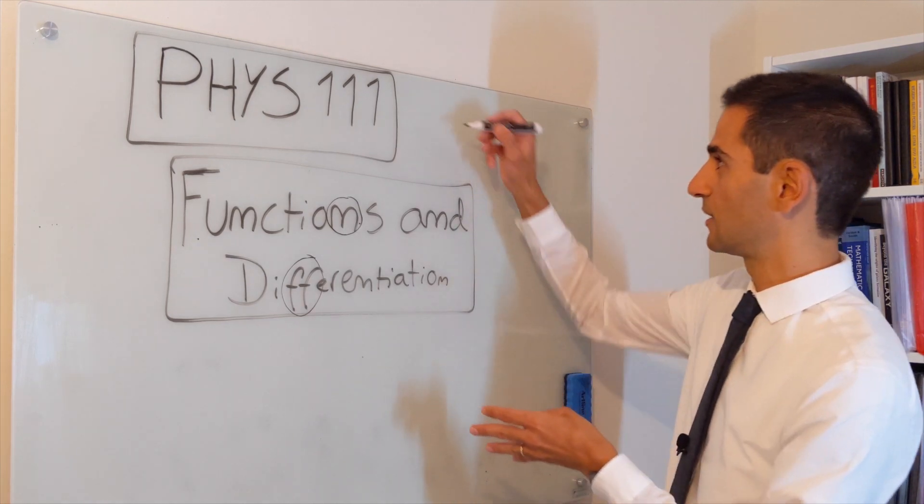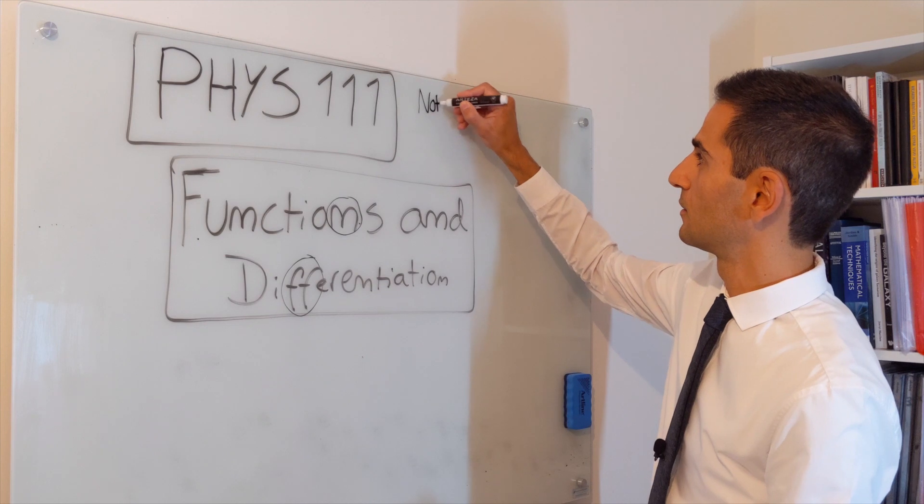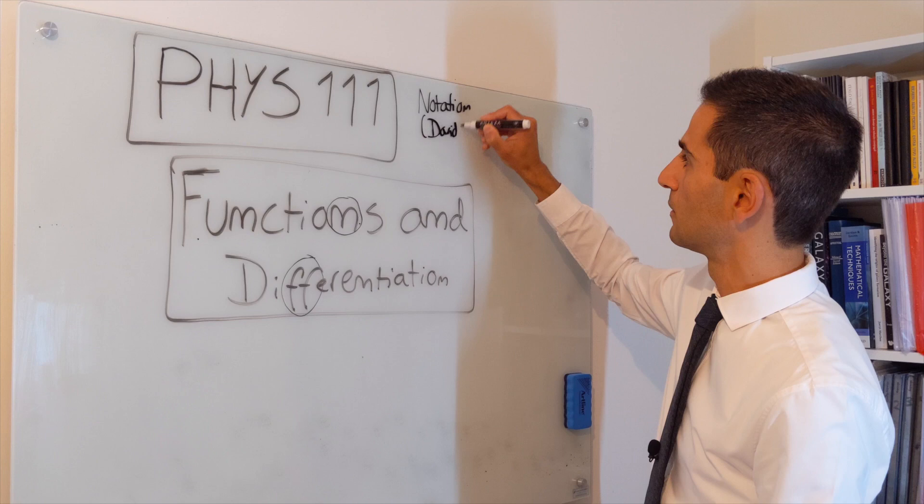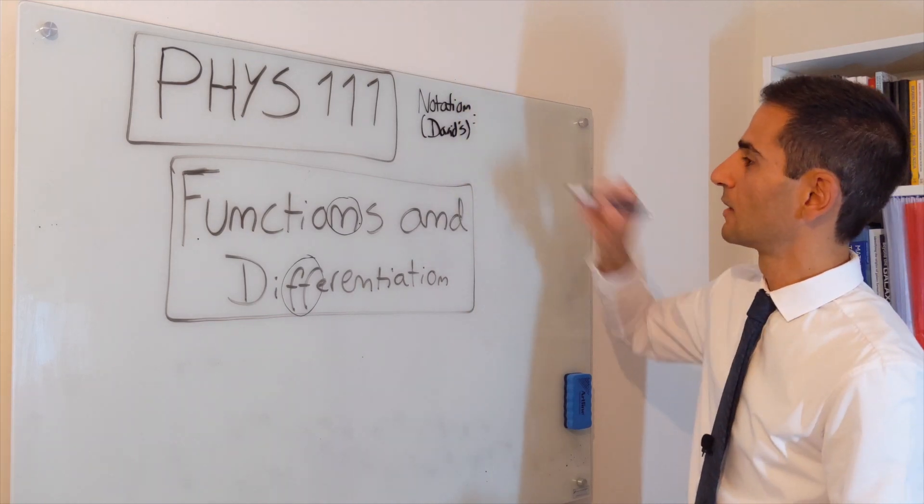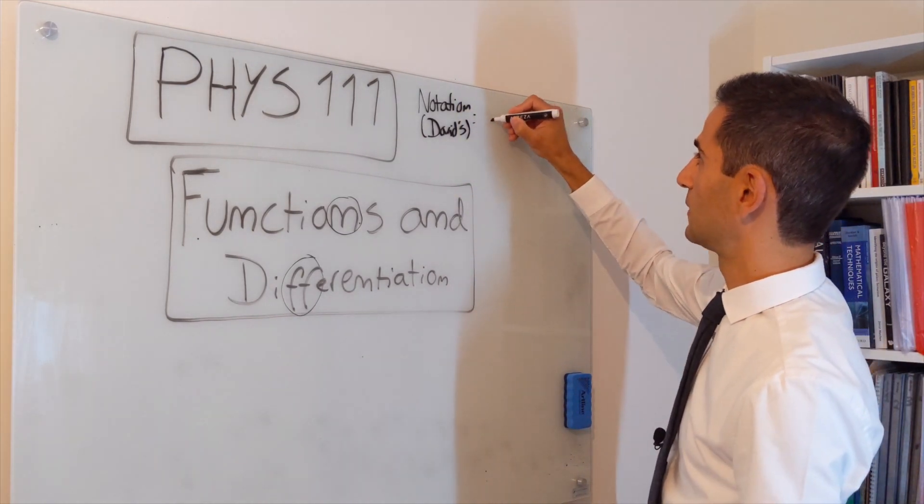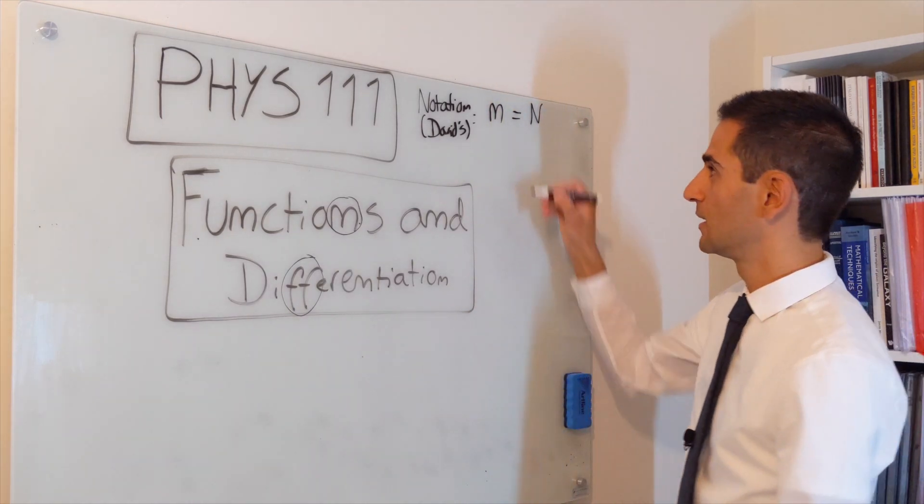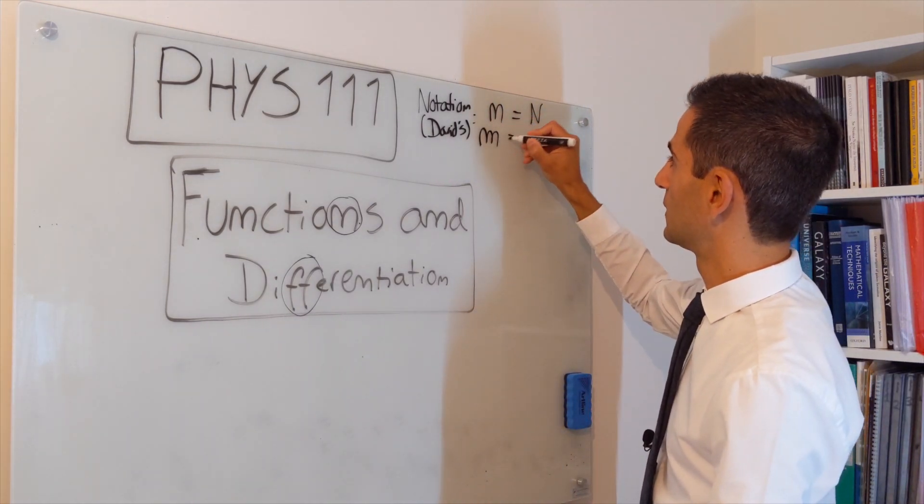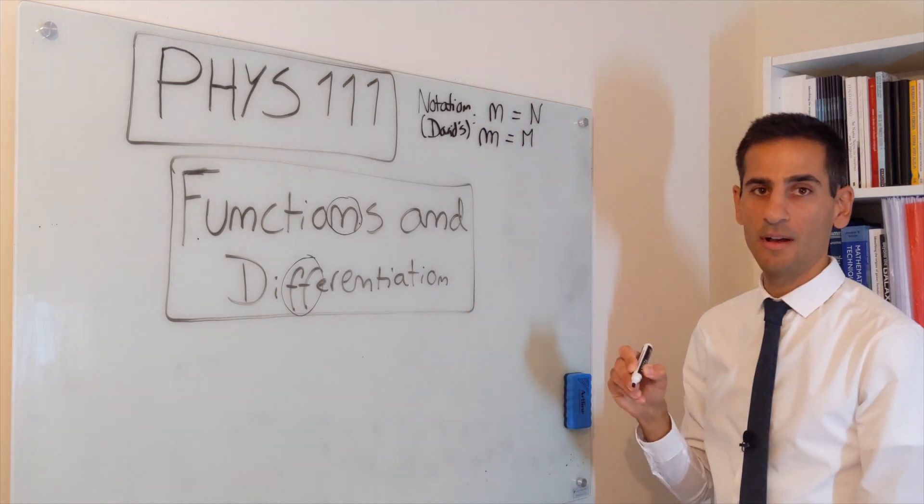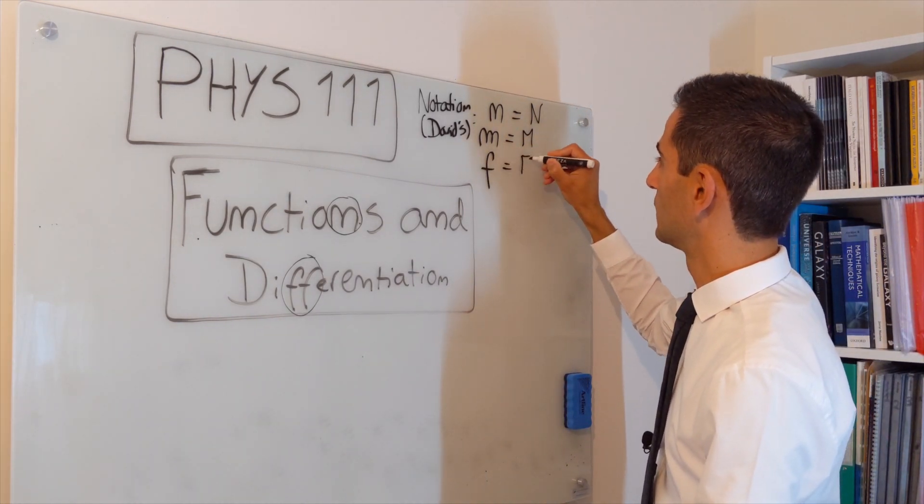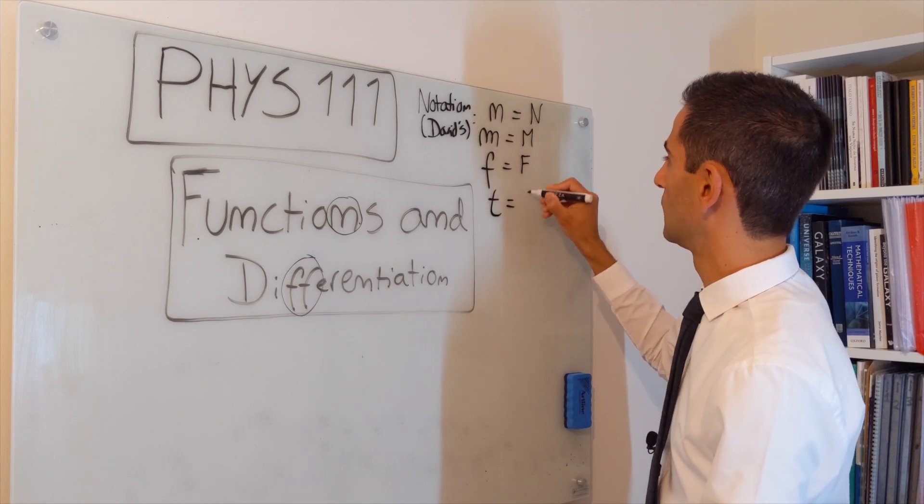But it is important for notation that whenever I write n, I mean a small n, whenever I write this, I mean an m, and f's will look like this, t's will look like this.